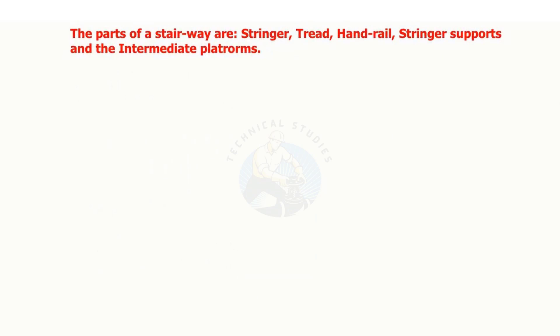The main parts of a stairway are the stringer, thread, handrail, stringer supports, and the intermediate platforms.